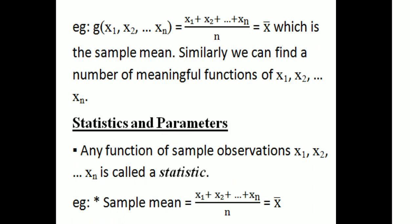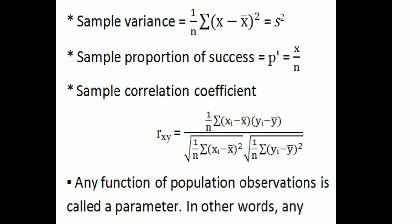Any function of sample observations x1, x2, ..., xn is called a statistic. Examples include: sample mean x-bar, sample variance s² = (1/n)·Σ(xi − x̄)², sample proportion of success p̂ = x/n, and sample correlation coefficient r_xy = [Σ(xi − x̄)(yi − ȳ)] / [√(Σ(xi − x̄)²) · √(Σ(yi − ȳ)²)].